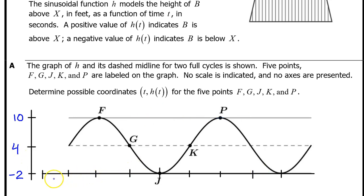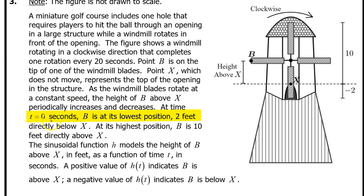Now let's build a horizontal scale for h(t). At t equals zero seconds, B is at its lowest position, two feet below point X.